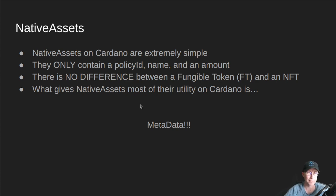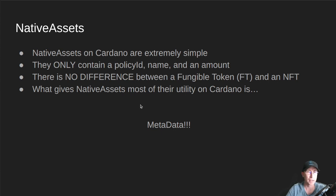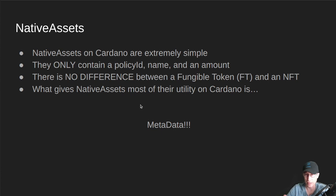The first thing we need to talk about is native assets. You may have heard this term interchangeably with NFTs or fungible tokens, but native assets is the smallest piece of data that's actually on the blockchain. Native assets on Cardano are extremely simple — they only contain three things: a policy ID, a name, and an amount. There is no real difference between a fungible token and an NFT; they are all native assets. The only difference is an NFT has one of them, and a fungible token has the amount set to something higher than one.